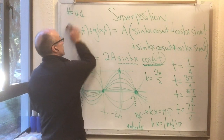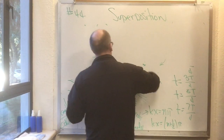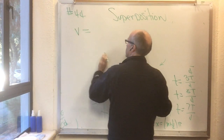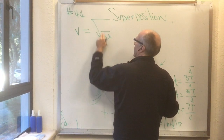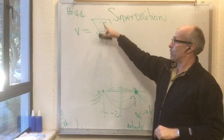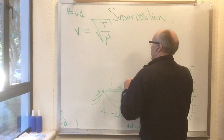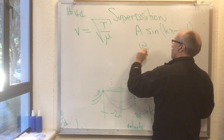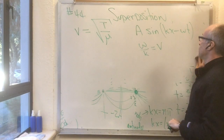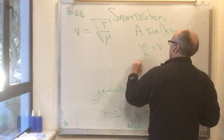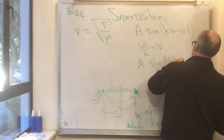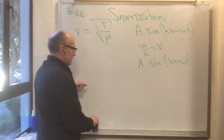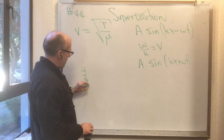Section 17.3 is about waves on a string. From equation 16.1, the wave velocity is v = √(T/μ), where T is tension and μ is mass per unit length. For a wave A sin(kx − ωt), ω/k = v. A very common situation — one you've dealt with in lab — is a string clamped at both ends, which cannot move at either endpoint.